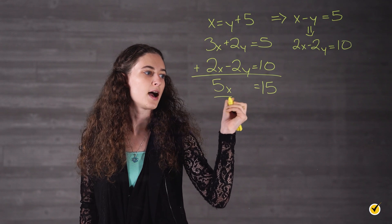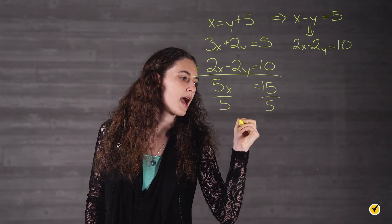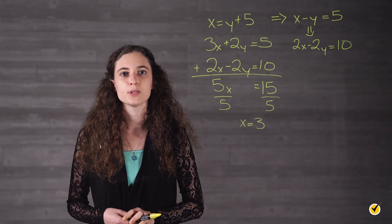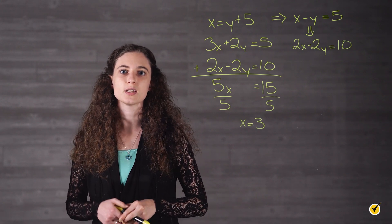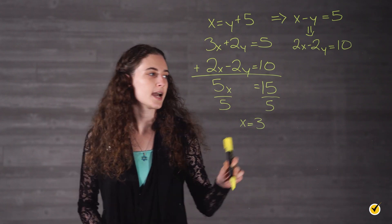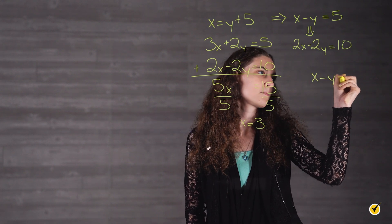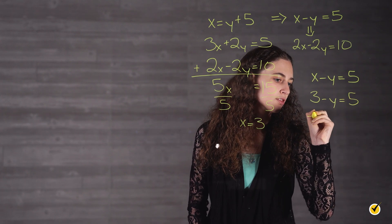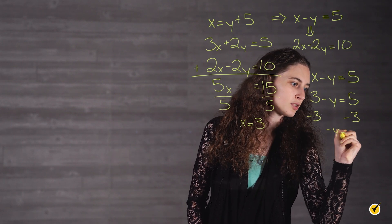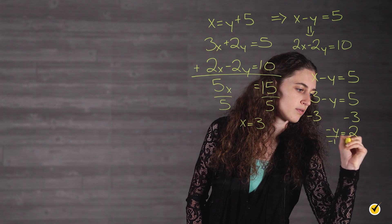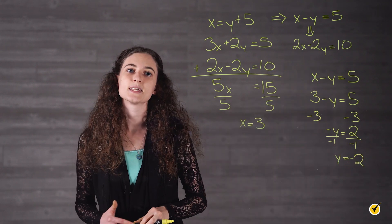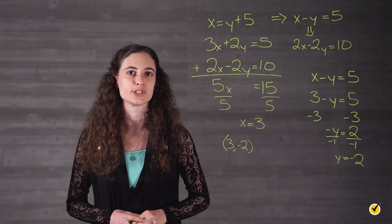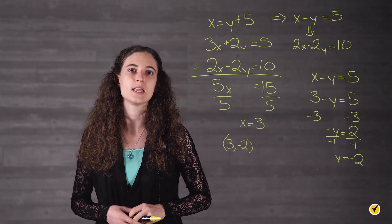We divide both sides by 5 and get x equals 3. Now we plug x equals 3 into the equation x minus y equals 5. Substituting 3 for x gives us 3 minus y equals 5. Subtracting 3 from both sides gives us negative y equals 2, and dividing by negative 1 gives us y equals negative 2. So the solution to our system is 3, negative 2. We chose to add the two equations so that the variable terms 2y and negative 2y would cancel each other out.